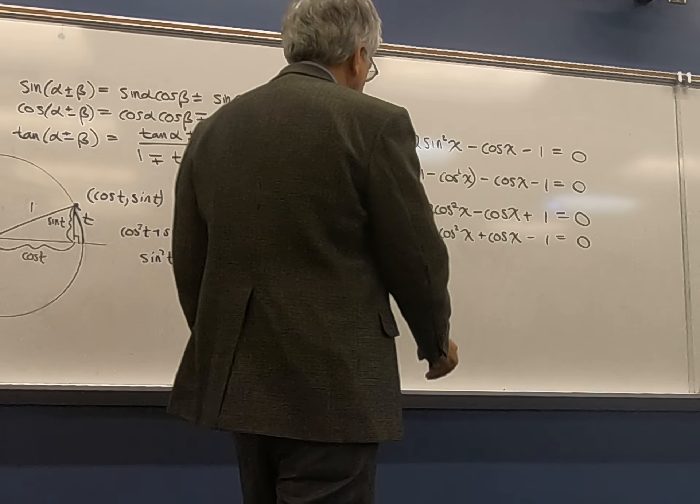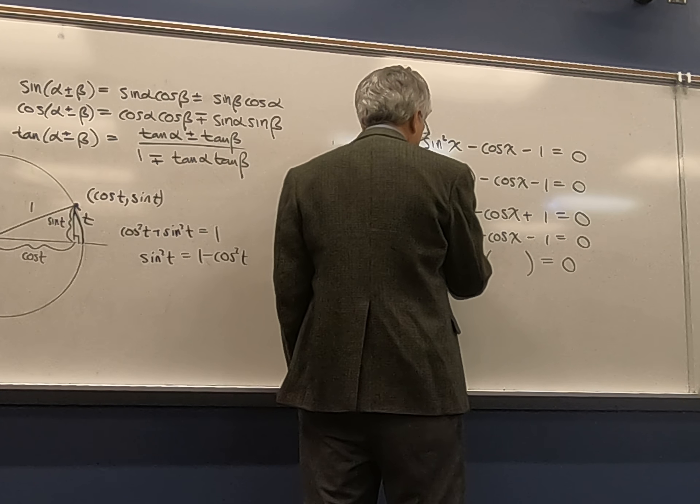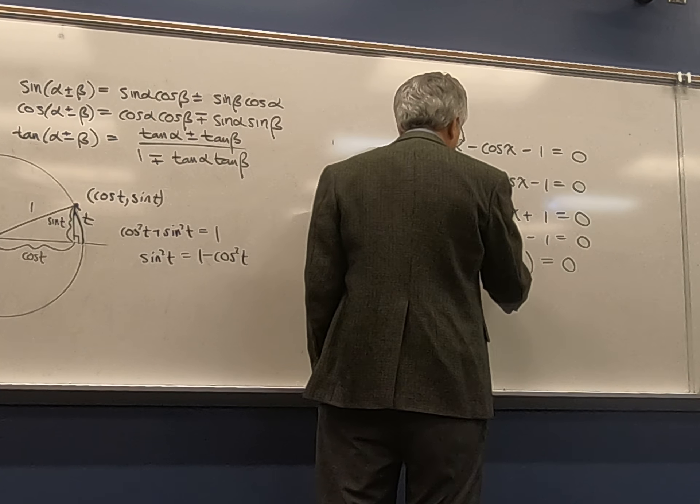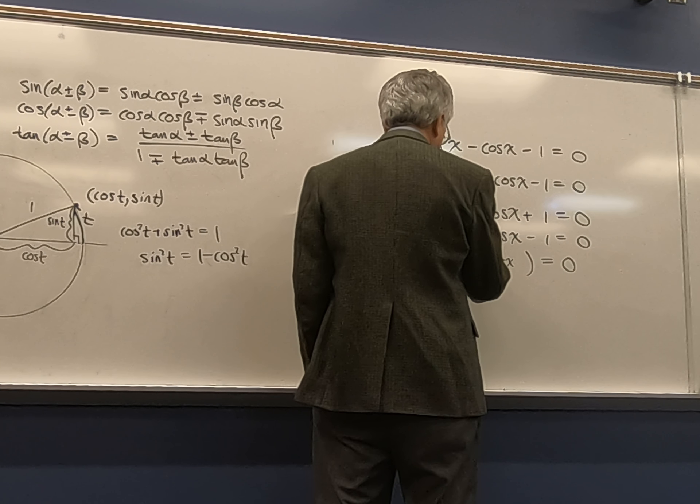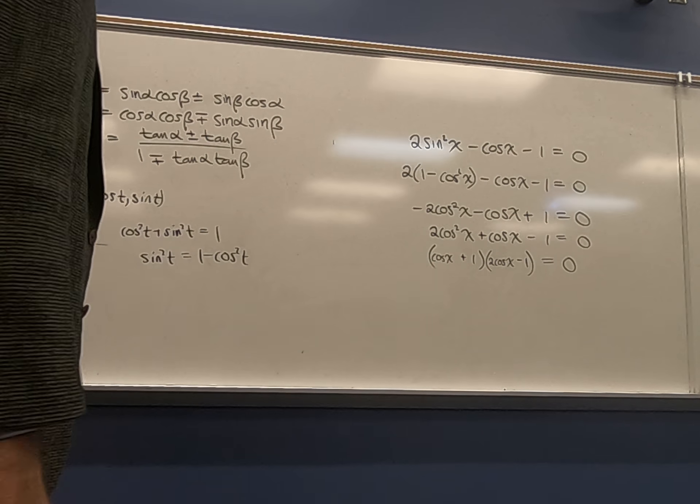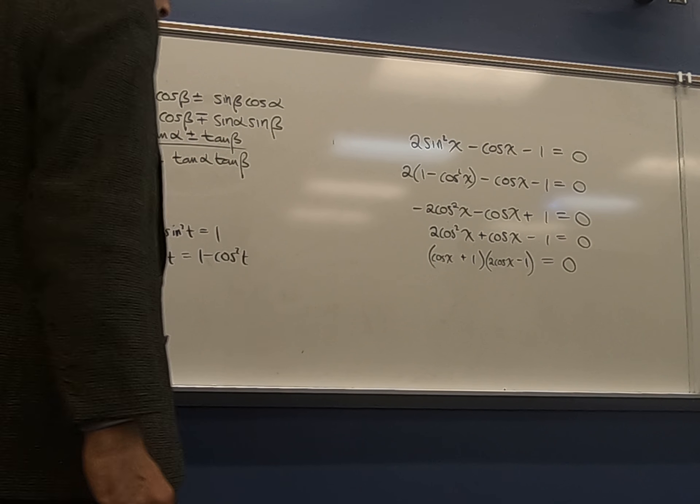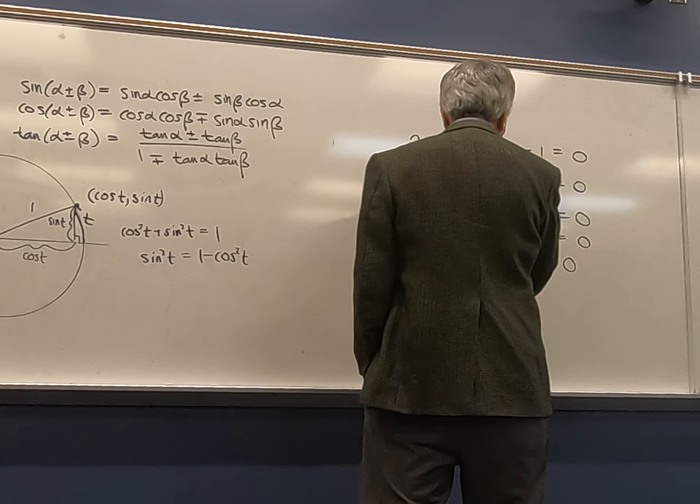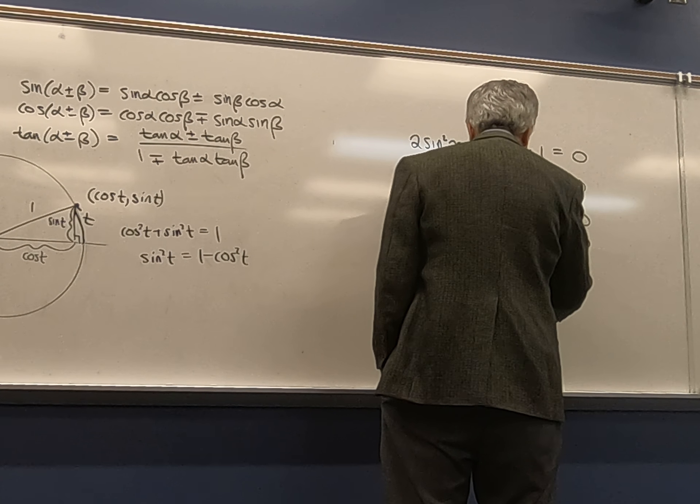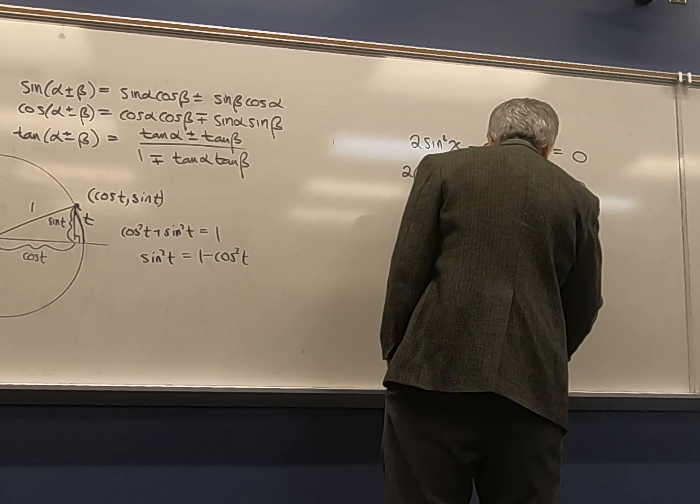Then I'm hoping, hey, maybe this factors. Does it factor? Yes. So this would have to be cosine x and two cosine x. And one and negative one somehow. I think this is plus one and minus one. Does that work? Yeah, that gets us where we want to be, right? So that gives us two equations, one for this is zero, one for that is zero. So either cosine x equals negative one or cosine x equals positive one half, right?